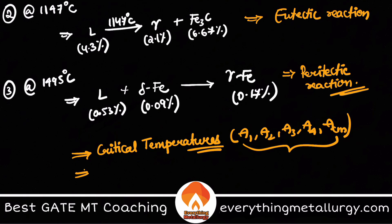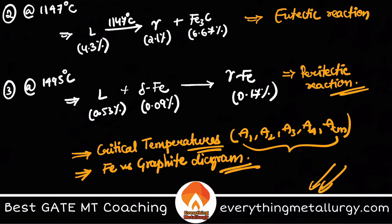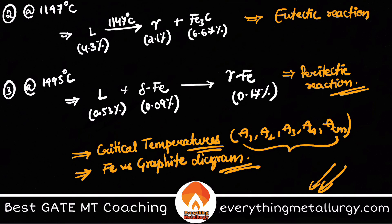Also, find and study the iron-plus-graphite diagram, observe the differences between that and the iron–iron carbide diagram. I hope you got a clear idea of the basics of the iron-carbon diagram and the different reactions involved. If you like it, please hit the like button and share with GATE metallurgy aspirants. Check out everythingmetallurgy.com for affordable test series and guidance programs. Meet you tomorrow with one more interesting concept. Thank you!